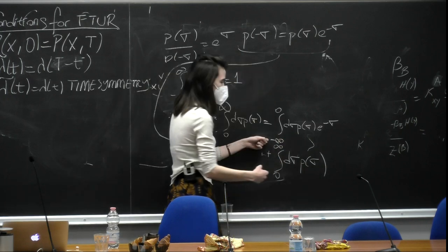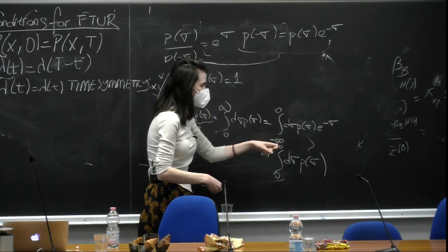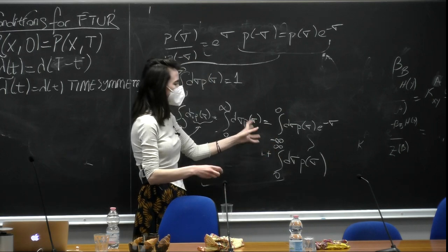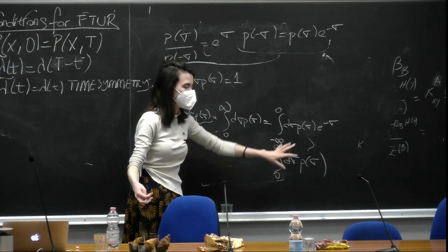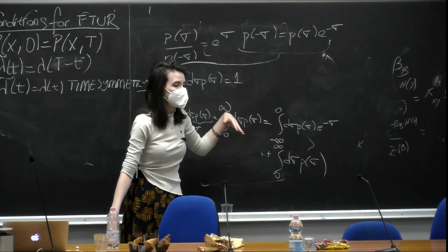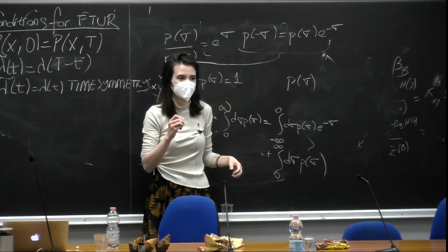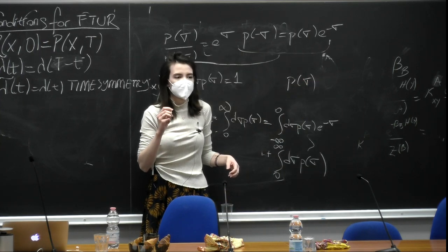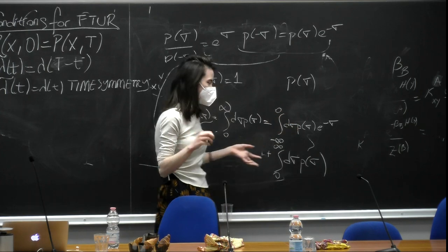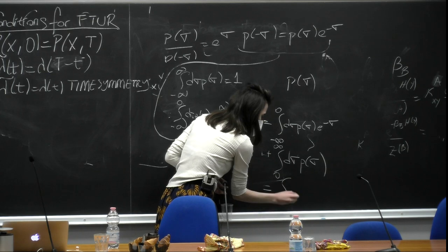Actually, what we're doing is cheating in a sense, because the way we wrote this is considering only the values of entropy production that go from 0 to infinity — all the positive values. So what we are getting at is manipulating the original probability distribution that characterizes entropy production and obtaining a new, modified probability distribution that characterizes it, considering only positive values.